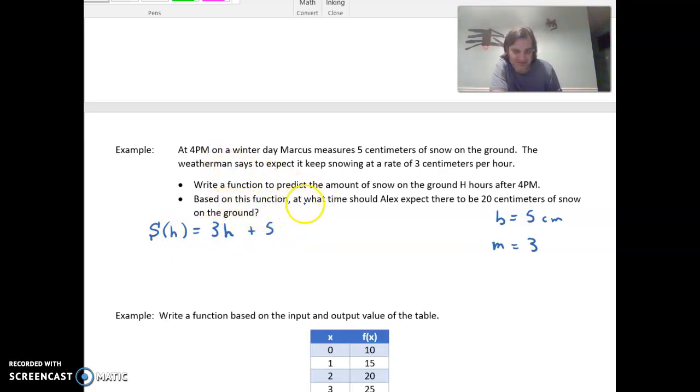And it says, based on this function, at what time should Alex expect there to be 20 centimeters of snow on the ground? So snow is s. We're kind of creating an equation if we do that. Usually we're thought of being given a time or an input, like hours here, and figuring out how much snow there would be. But to answer the question, we'll say there's looking for 20 inches, so let that be the amount of snow.